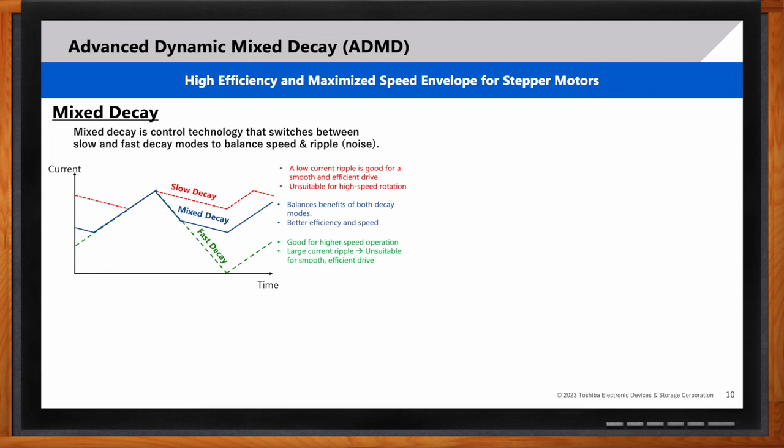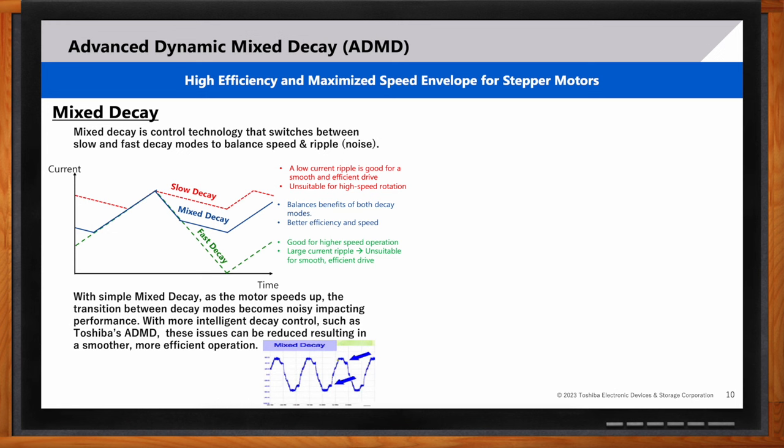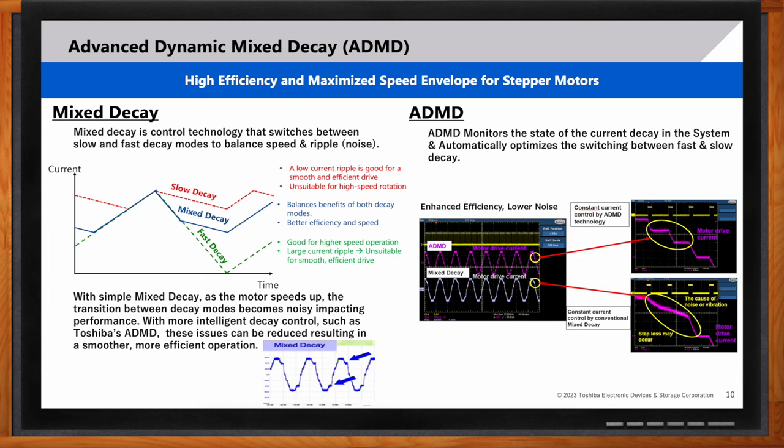So, mixed decay balances the benefits of both these decay modes to give you good efficiency and speed. However, with simple mixed decay, as the motor speeds up, the transition between these decay modes can become quite noisy. And this will impact performance. If you have an algorithm that more intelligently controls the switch between these decays, such as Toshiba's ADMD, you can reduce the impact of these issues, making for smoother and more efficient operation. Our ADMD monitors the state of the current decay in the system, and then automatically optimizes the switching between these fast and slow decay modes. Simpler mixed decay modes just rely on a fixed time to switch between these two. And this is where you can run into issues. If we dynamically change the switching point, we're able to change that based on the actual speed of the motor. And this allows us to get smoother control, as well as avoid missed steps.